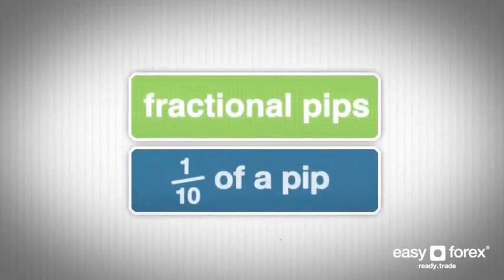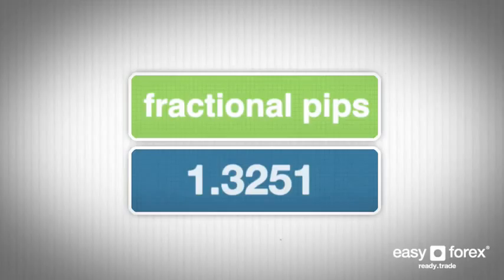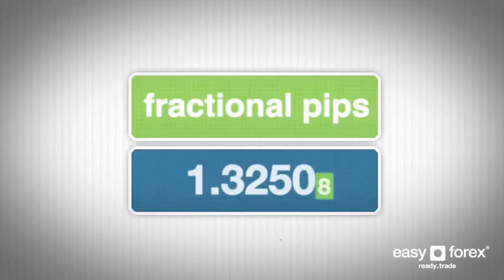A fractional PIP is a tenth of a PIP, and the addition of this feature to your account allows you to take advantage of smaller price increments and moves in the market. Instead of quoting prices to two or four decimals, with fractional PIPs we quote an extra digit. For example, normally the EUR/USD ask would be quoted as 1.3251, while with fractional PIPs we quote 1.32518, with the last smaller digit representing the fractional PIP.